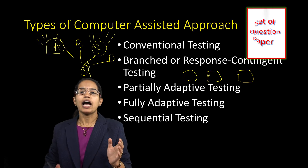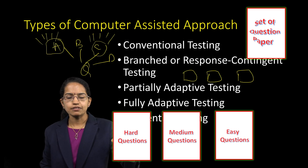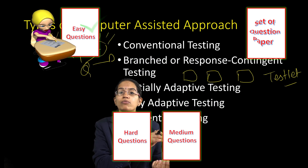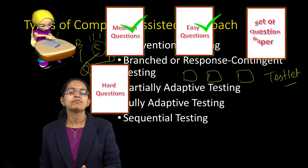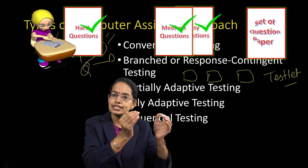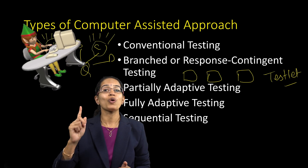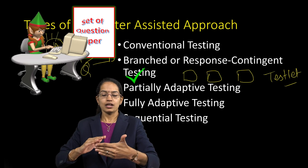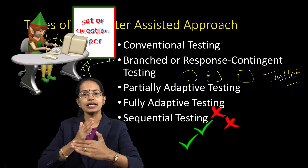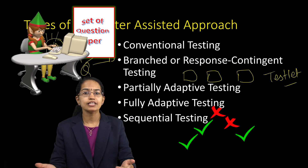The third type is the partially adaptive test. Here, questions are divided into three categories — easy, medium, and hard — forming groups called testlets. If a student performs well on the first testlet, the next testlet given will be more difficult; if not, it will be easier. You move group by group rather than question by question. In contrast, a fully adaptive test goes question by question: answer correctly and the next is harder; answer incorrectly and the next is easier.